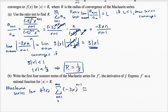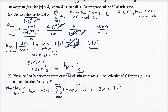When n equals one, negative three x to the zero power is just one. When n equals two, negative three x to the first power is negative three x. When n equals three, negative three x squared gives nine x squared. And the fourth term, when n equals four, negative three x to the third power is negative 27x cubed.